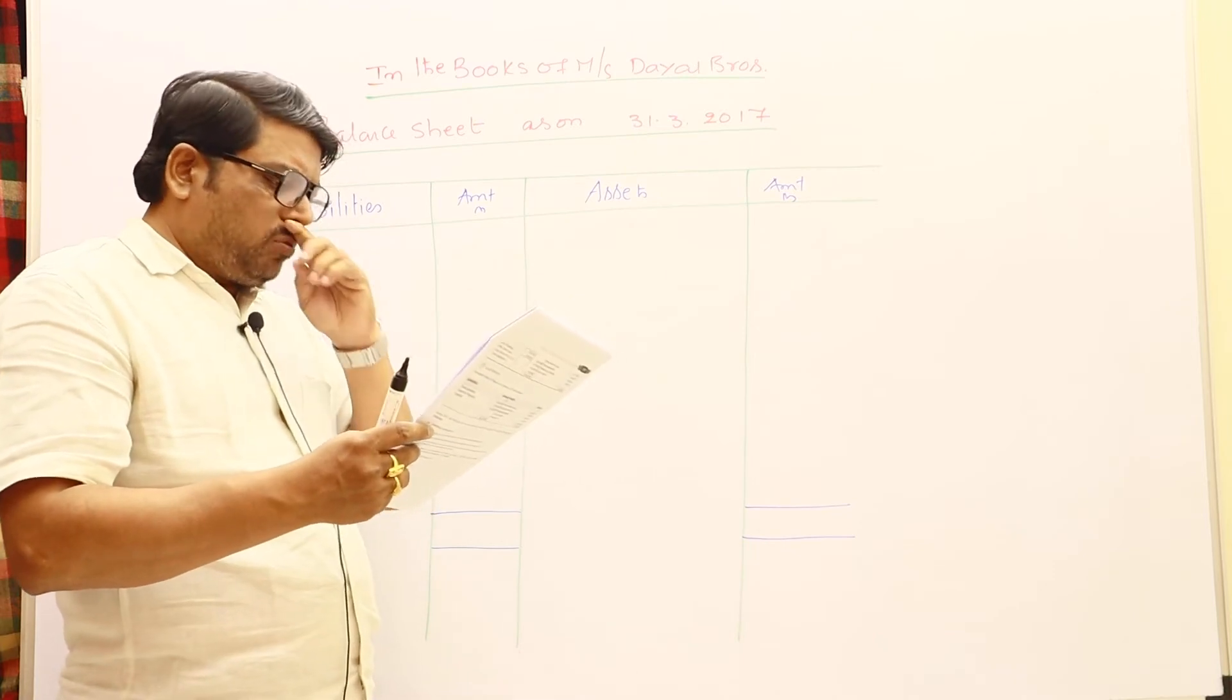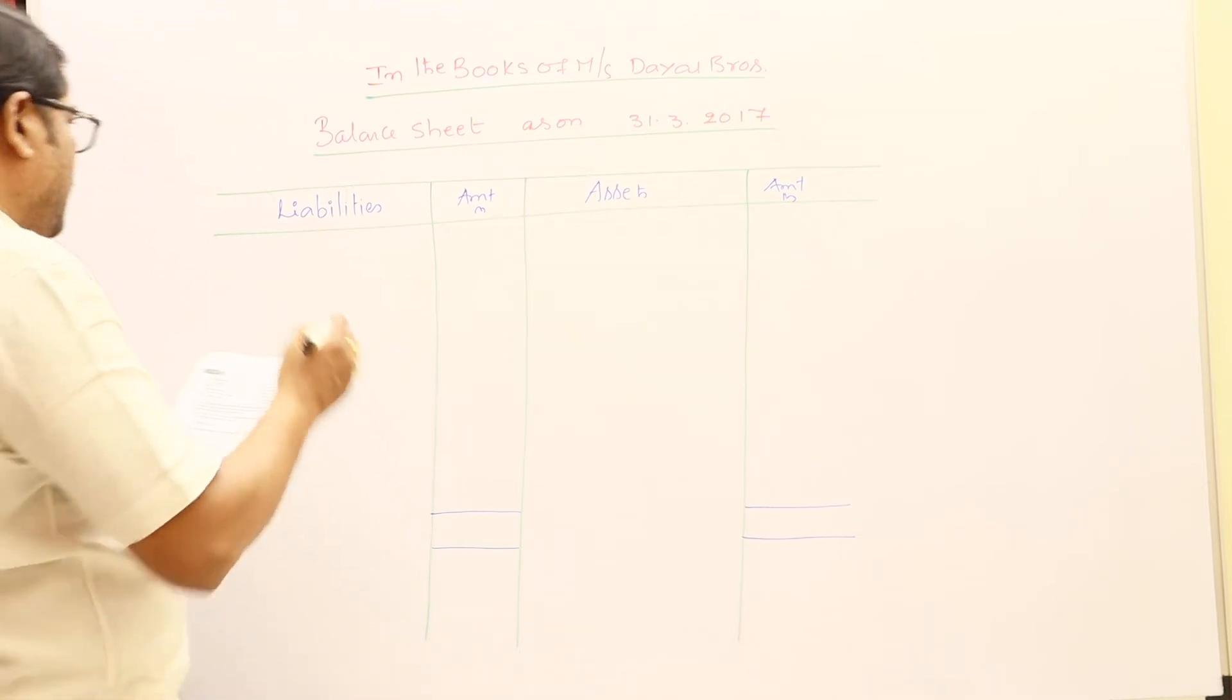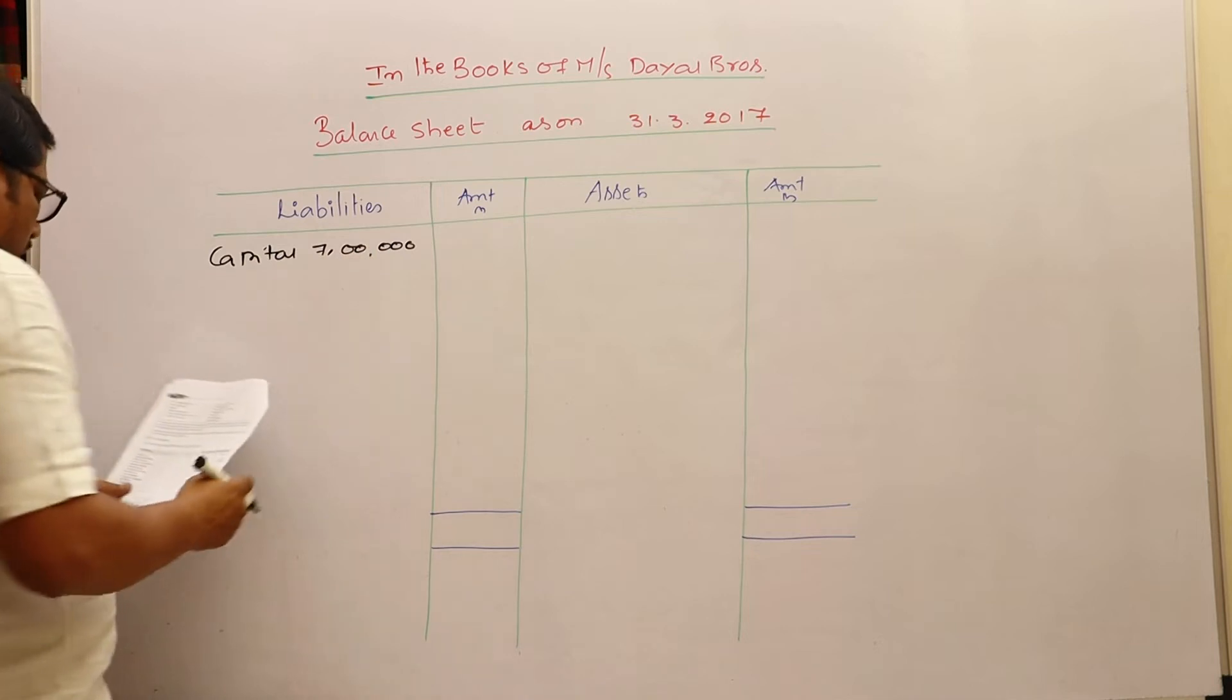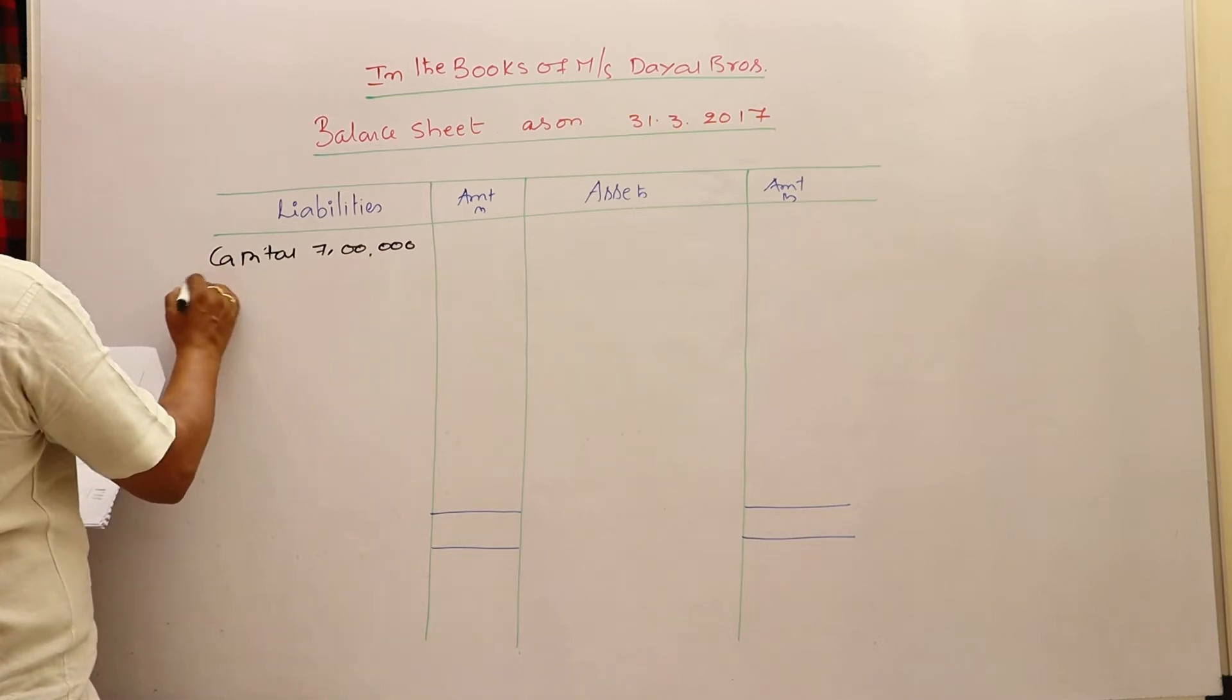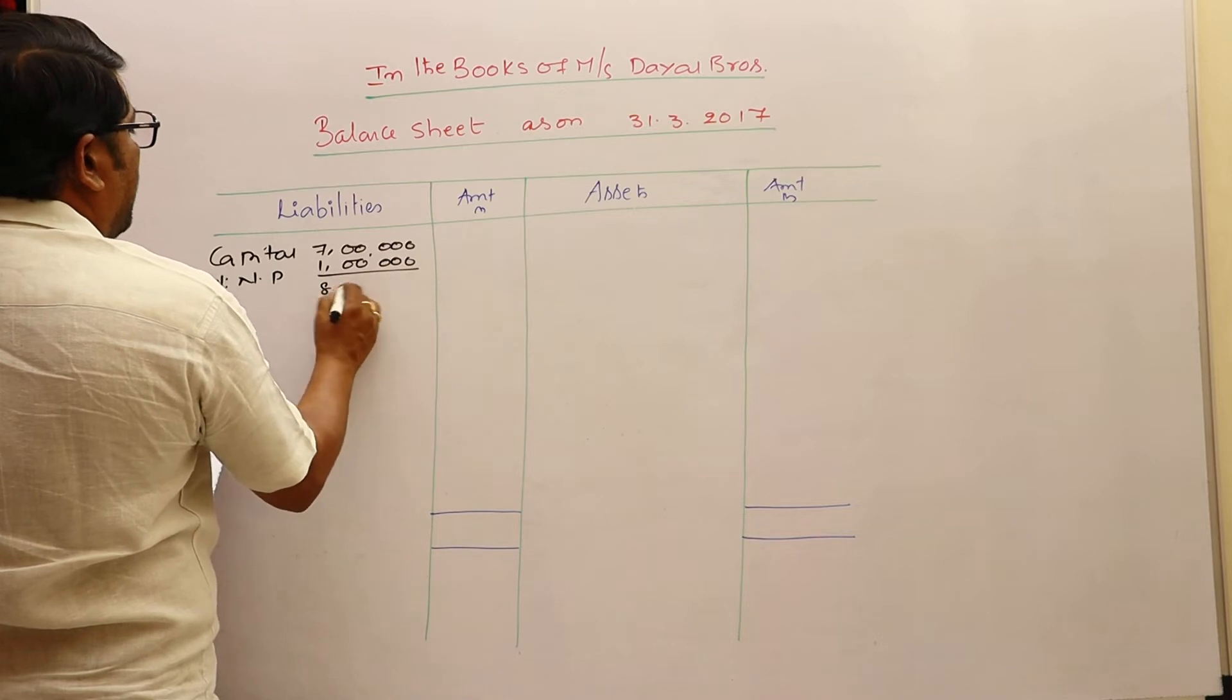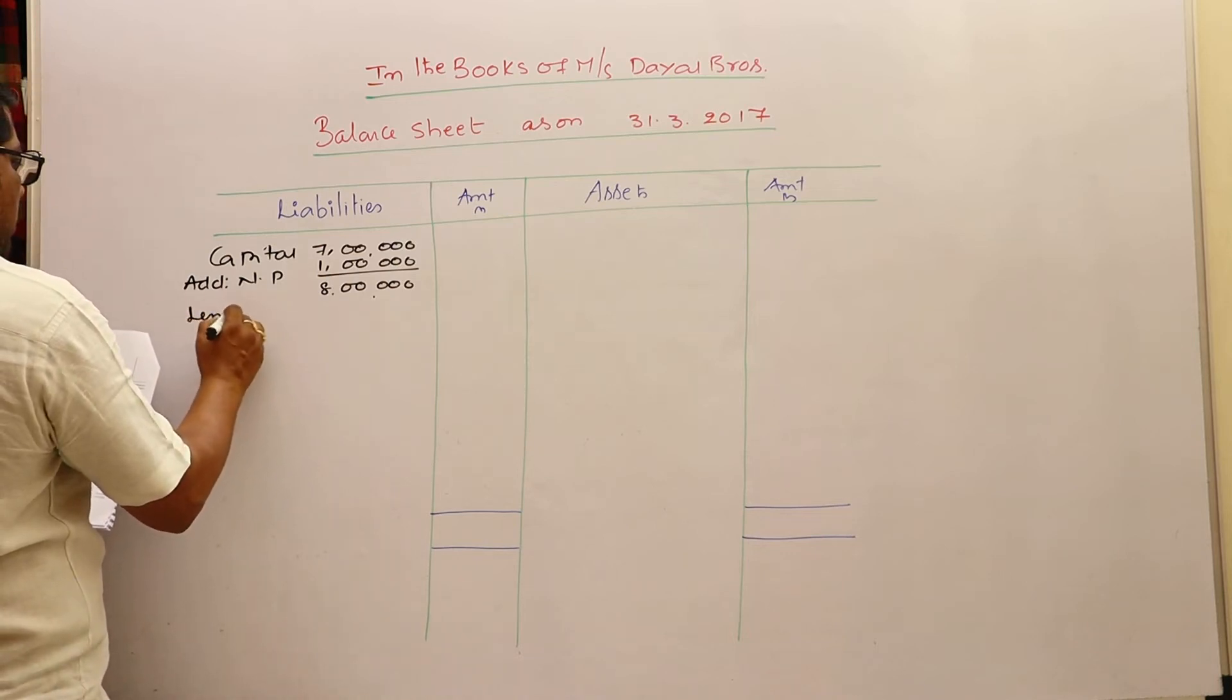One by one I would like to take here. Capital - write in the inner column, seven lakhs. Capital write in the inner column, seven lakhs. Add net profit one lakh. This is eight lakhs. If any drawings are there, that should be deducted. Less drawings sixty thousand.